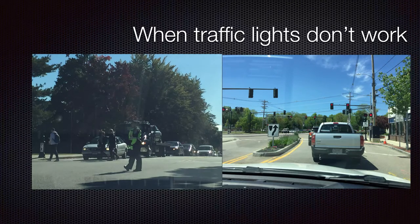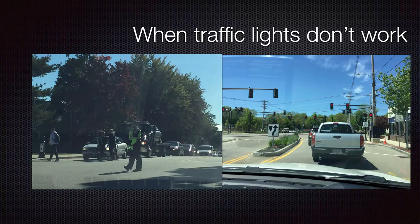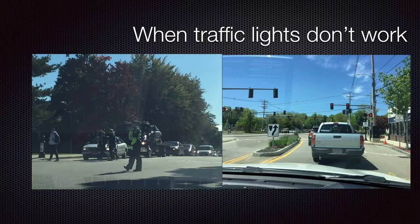When traffic lights don't work — write this down — always obey the controls of a police officer. A police officer overrules stop signs and traffic lights; they become the governing controller of that intersection. A light might not work due to an electrical storm, wintertime conditions, or someone hitting a telephone pole. If there's no police officer to help control traffic, treat it like a four-way stop — everybody treats the traffic light like a stop sign.